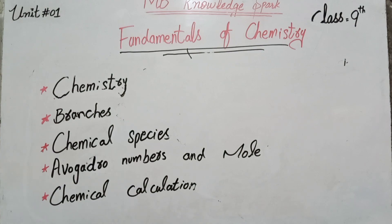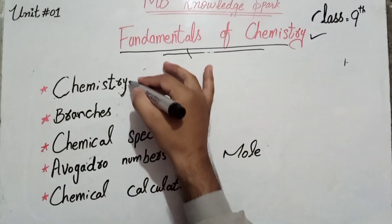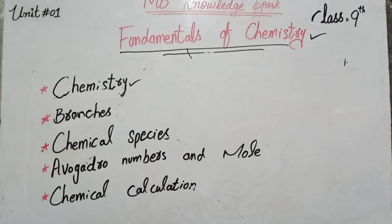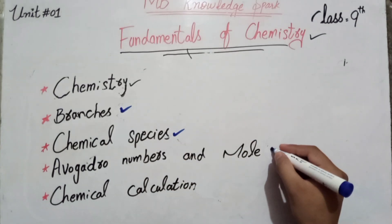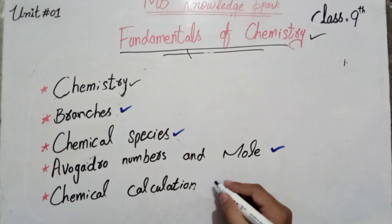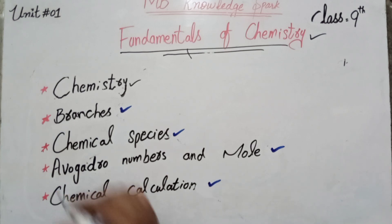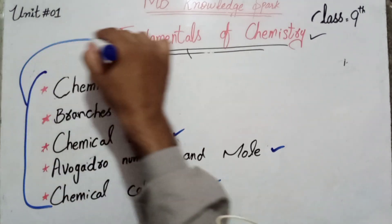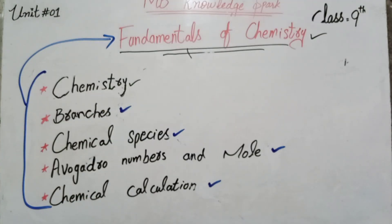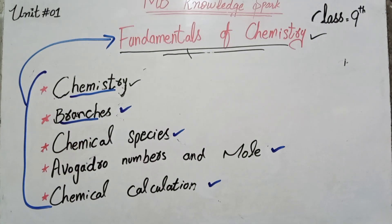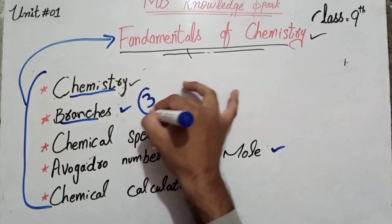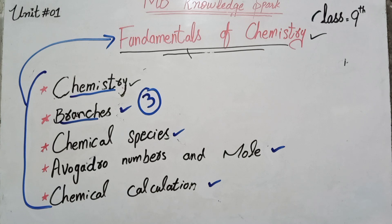Today we discuss Unit 1 of chemistry, which is named 'Fundamentals of Chemistry.' In this unit we will discuss what is chemistry, how many branches of chemistry, what are chemical species, what is Avogadro's number and moles, and how we can do chemical calculations. Today's video I will tell you about what is chemistry and branches of chemistry — mainly three branches: physical chemistry, organic chemistry, and inorganic chemistry.